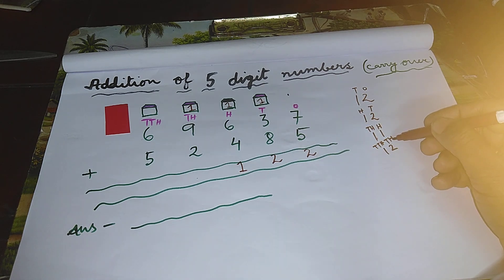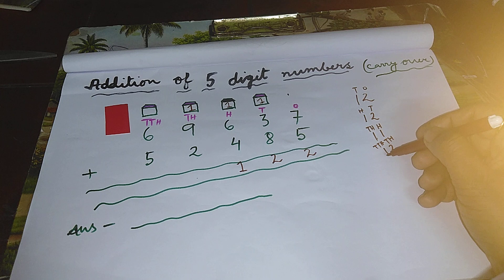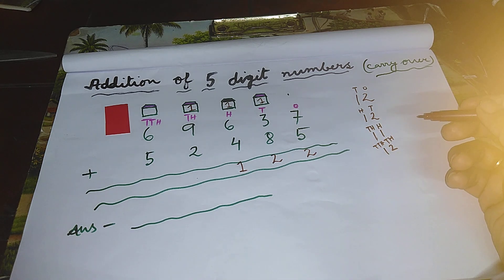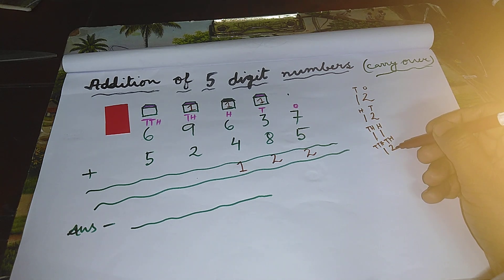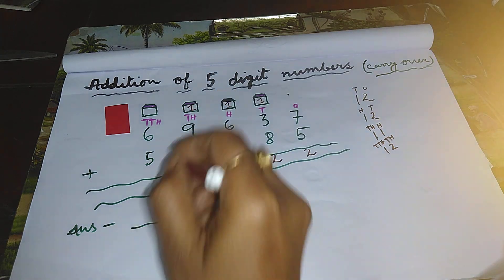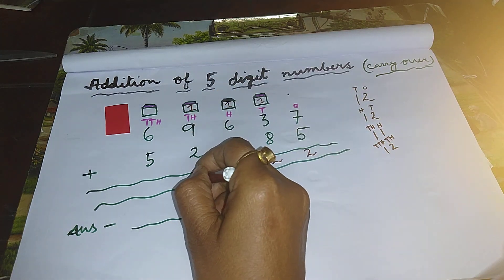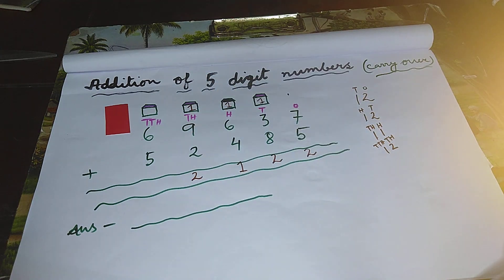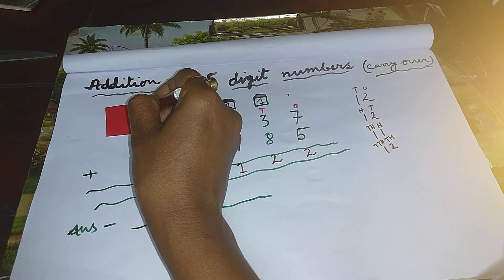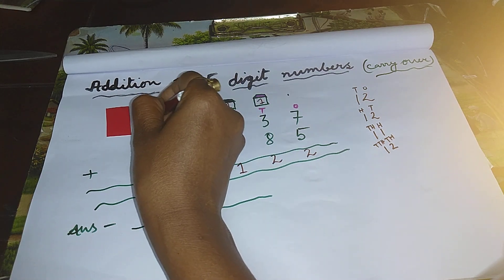See, children, two belongs to thousand's place. One belongs to ten thousand's place. So two will sit in the thousand's column. We will make a separate room for this one.